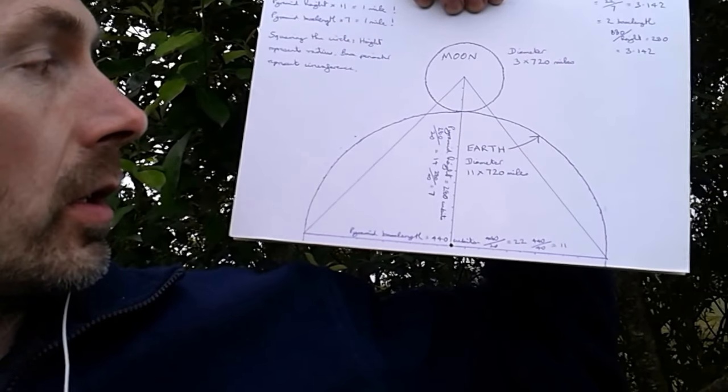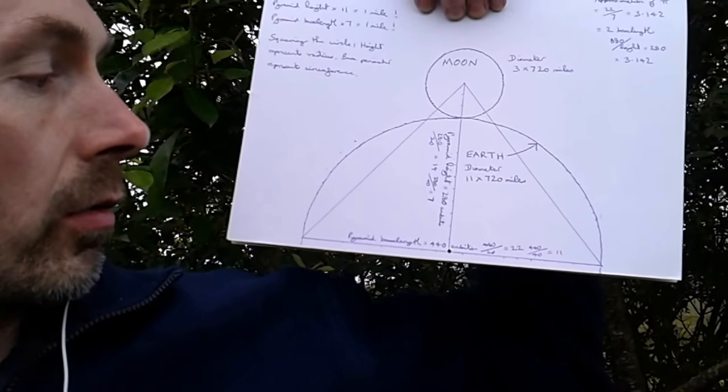The ratio is interesting and important. If you take the height of 280 Egyptian royal cubits and divide by 20, you get 14. Do the same with the base length and you get 22. So that's what I've marked out here — 14 units high and 22 units across the base.